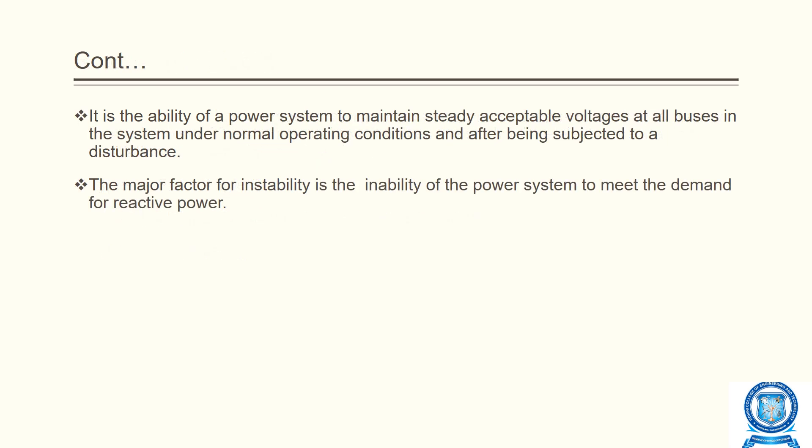Voltage stability is the ability of a power system to maintain steady, acceptable voltage at all buses in the system under normal operating conditions and after being subjected to a disturbance. The main factor for instability is the inability of the power system to meet the demand for reactive power, which is the major cause of voltage stability problems.